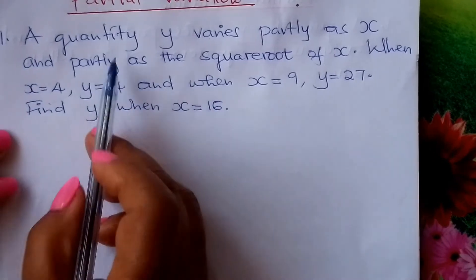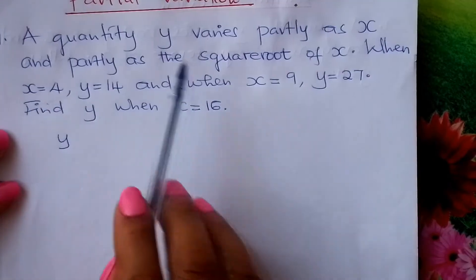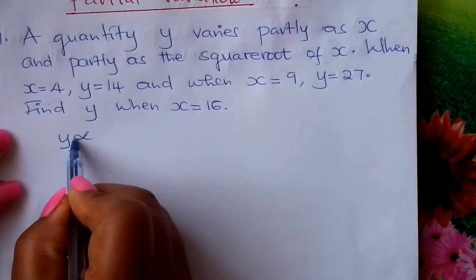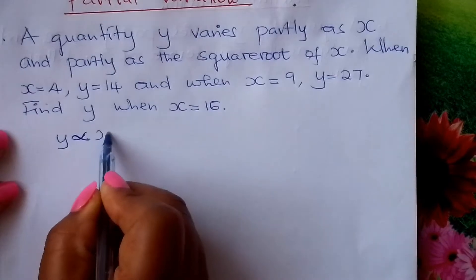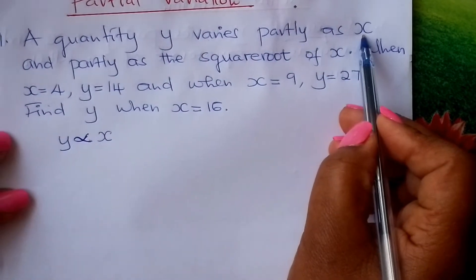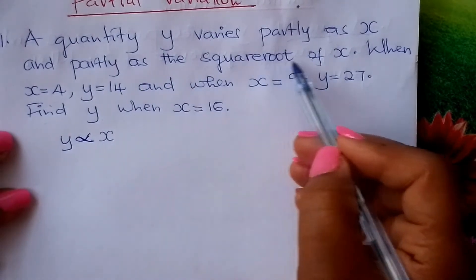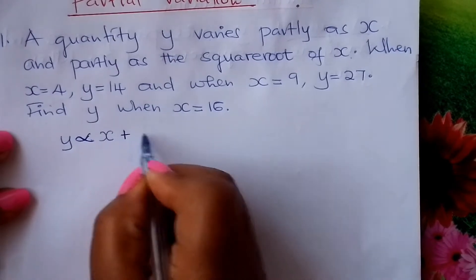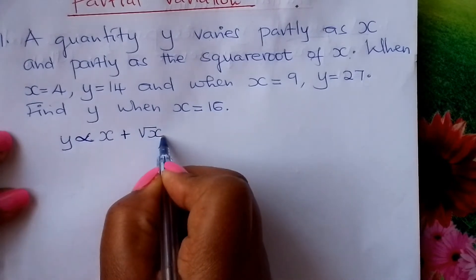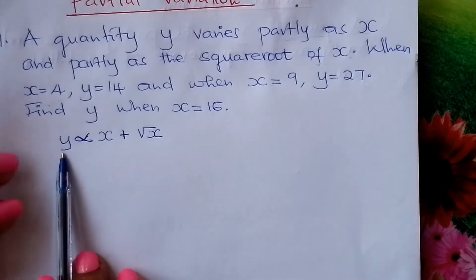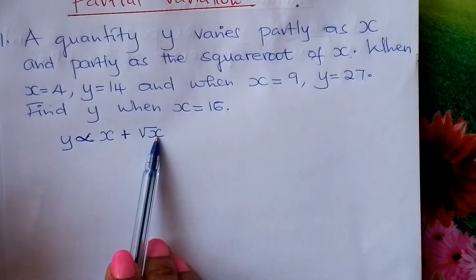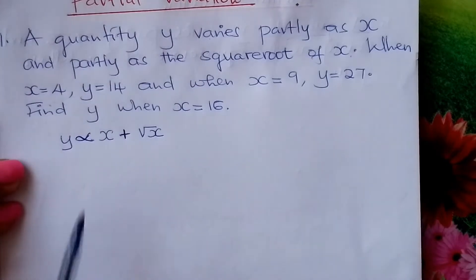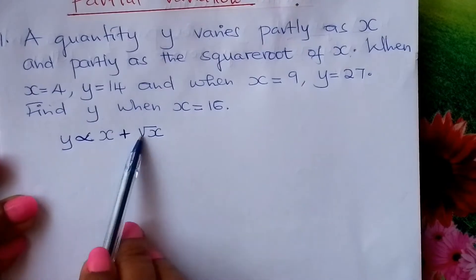We go to the first sentence. A quantity Y varies partly as X — you can write a proportionality sign. And partly as the square root of X. In partial variation, we add the two parts together. So Y is proportional to X plus the square root of X.